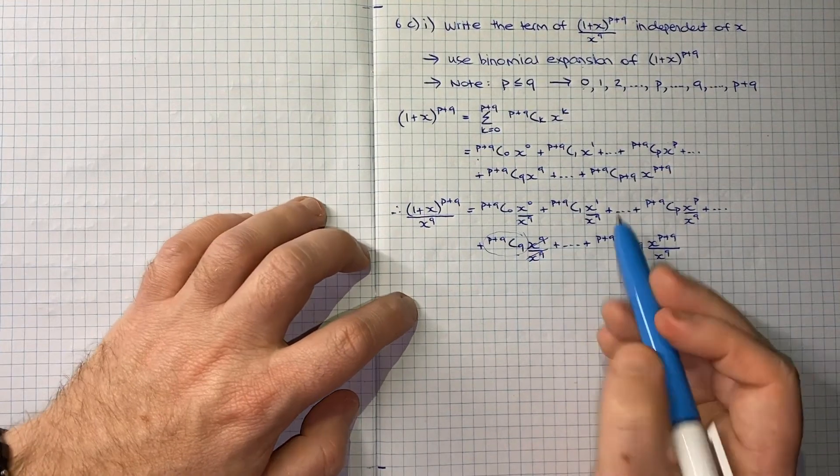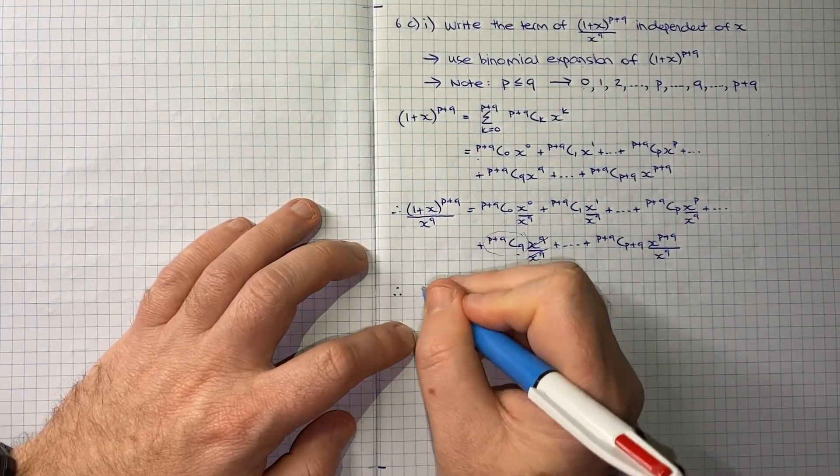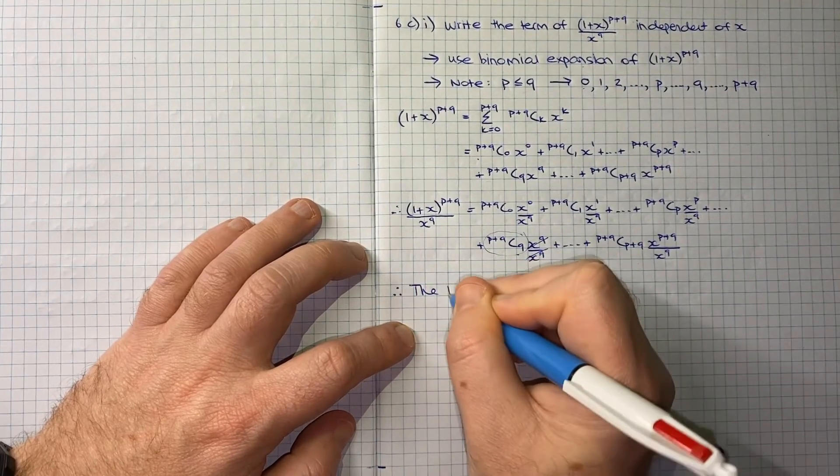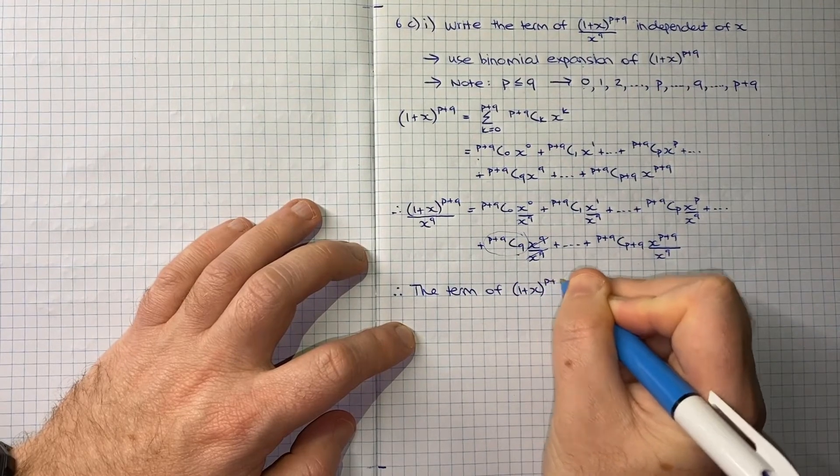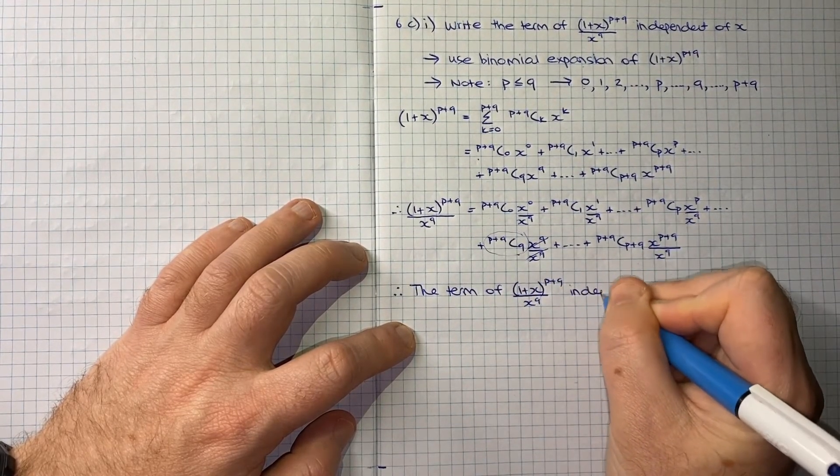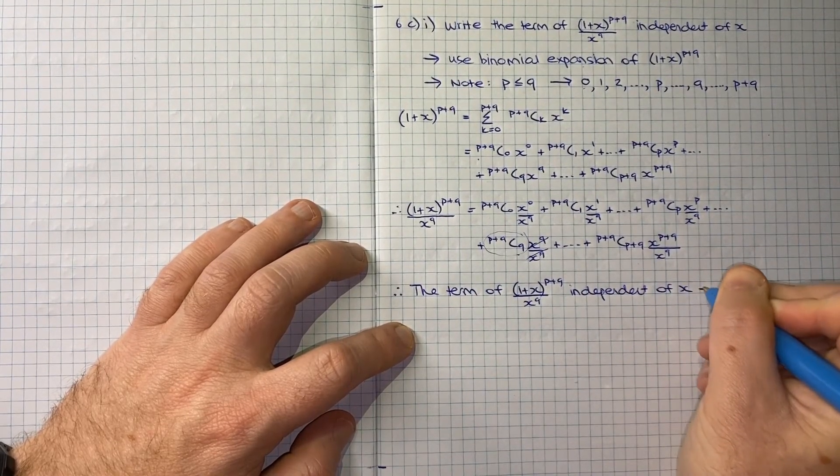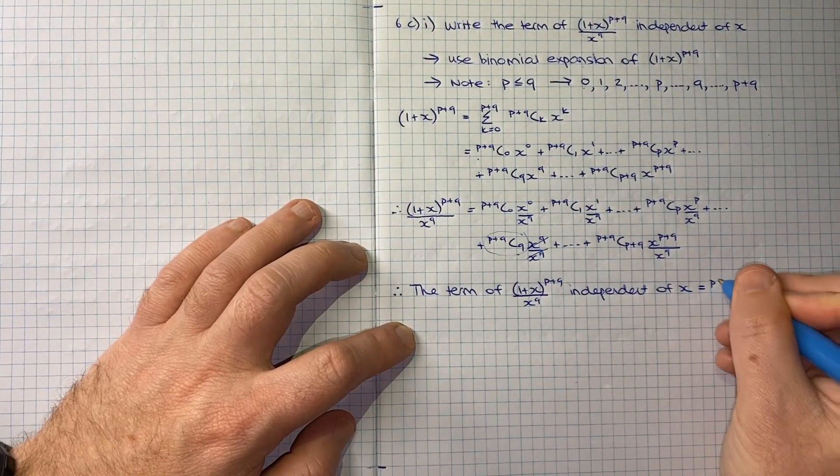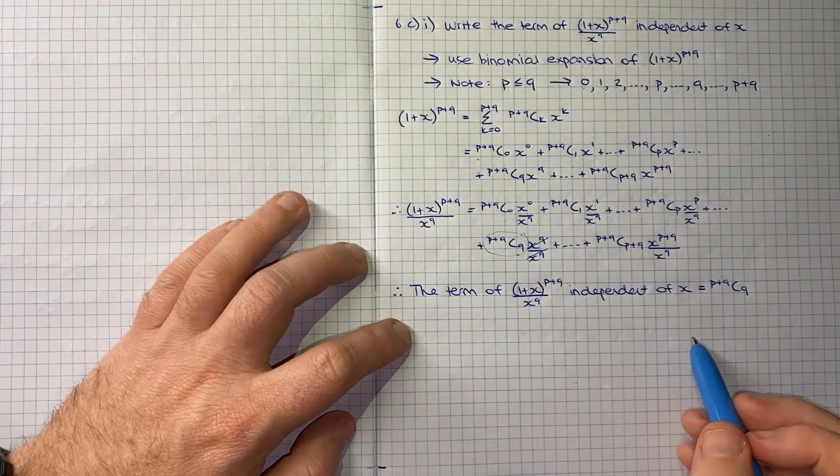So I think that means we can now conclude that the term of (1+x)^(p+q) over x^q that is independent of x will be equal to (p+q choose q). And that's how you tackle that question.